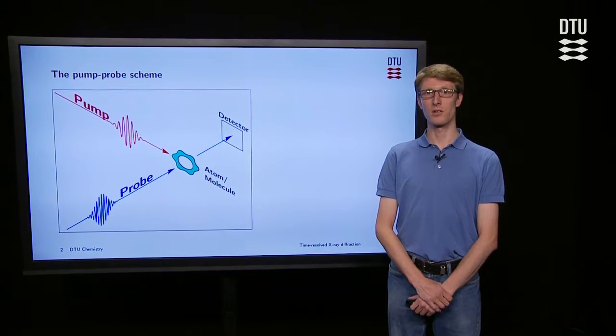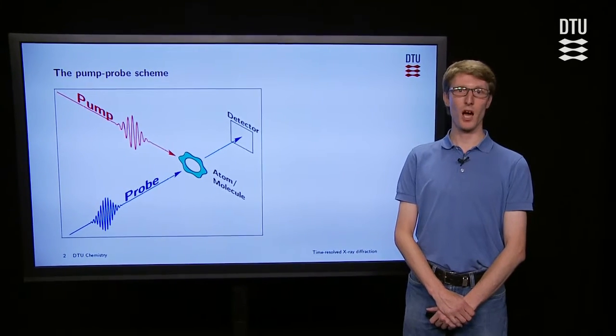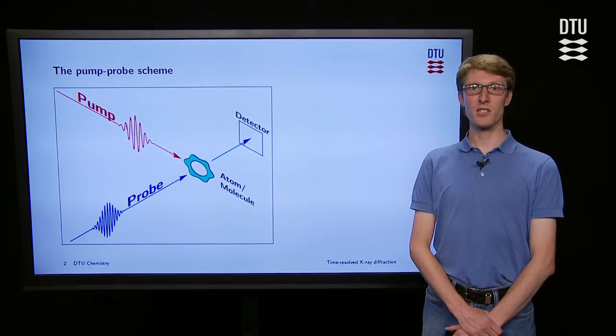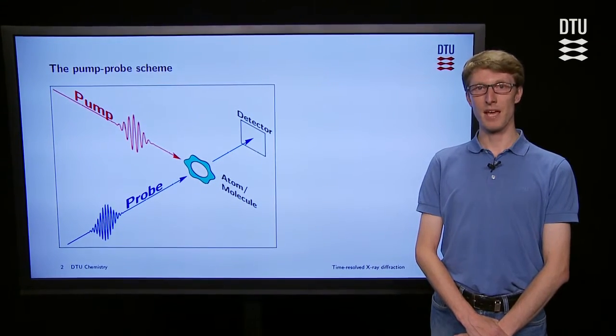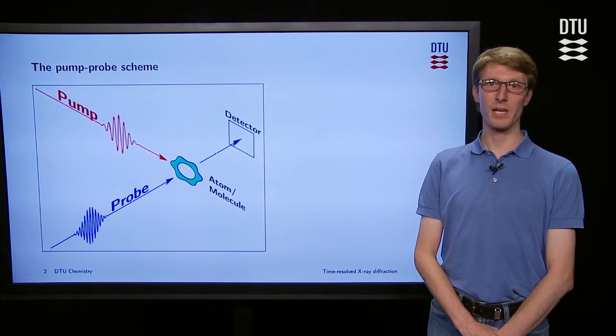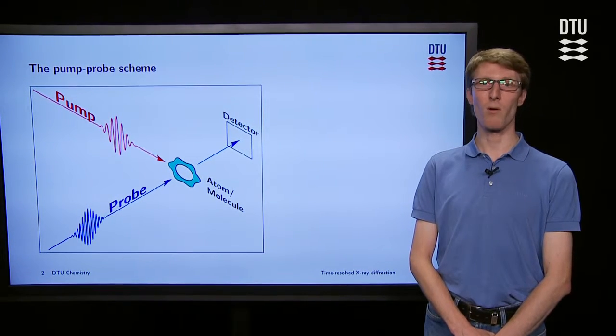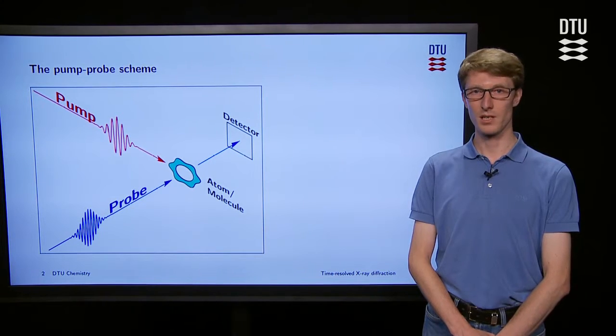This allows us to get snapshots of the dynamics at certain points in time. The radiation is scattered in our system and detected. By means of that, we get a 2D image that contains information about the electronic structure.